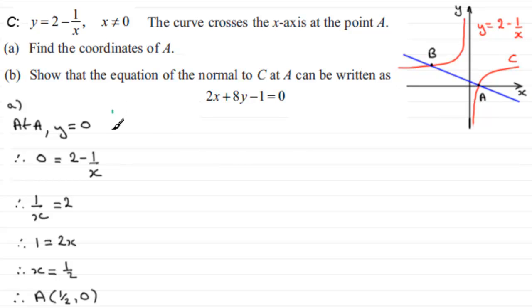Now, for part B, how are we going to show that the equation of the normal to C at A can be written as 2x plus 8y minus 1 equals 0? Well, first of all, I've got to get the gradient of the tangent at this point A. And once I've got the gradient of that tangent, I'm going to find the negative reciprocal of it because that will give me the gradient of our normal.